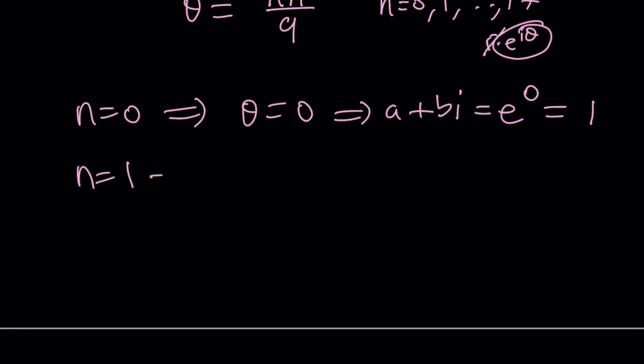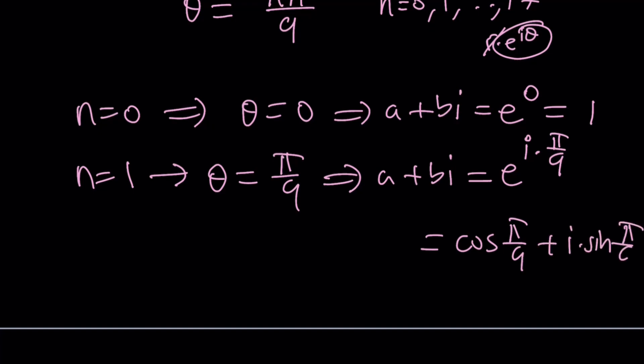If n is equal to 1, then theta would be pi over 9. And a plus bi, which is our complex number as well as the name of this channel, is going to be e to the power i times pi over 9, which can be written as cosine pi over 9 plus i sine pi over 9. By the way, that's 20 degrees. This means a is equal to this and b is equal to that. But wait a minute. Can we find the exact value of cosine 20 degrees? I don't think so. But if you do, please let us know in the comment section down below.